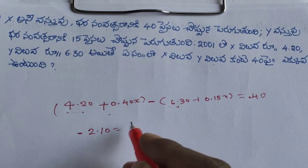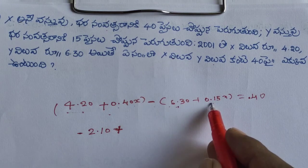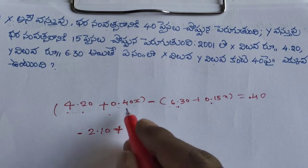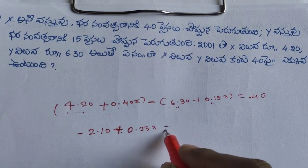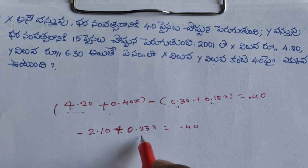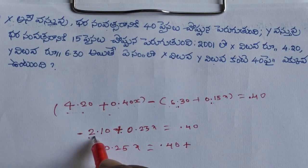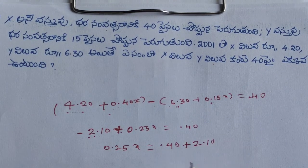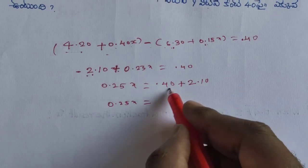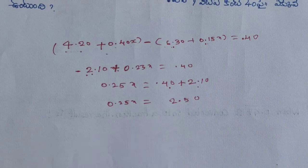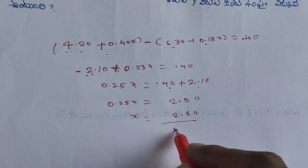So 0.4x plus minus 0.15x minus 0.25x equal to 0.40. The negative value becomes: 0.40 plus 2.10 equals 2.50. So x equals 2.50 divided by 0.25, which gives x equals 10.